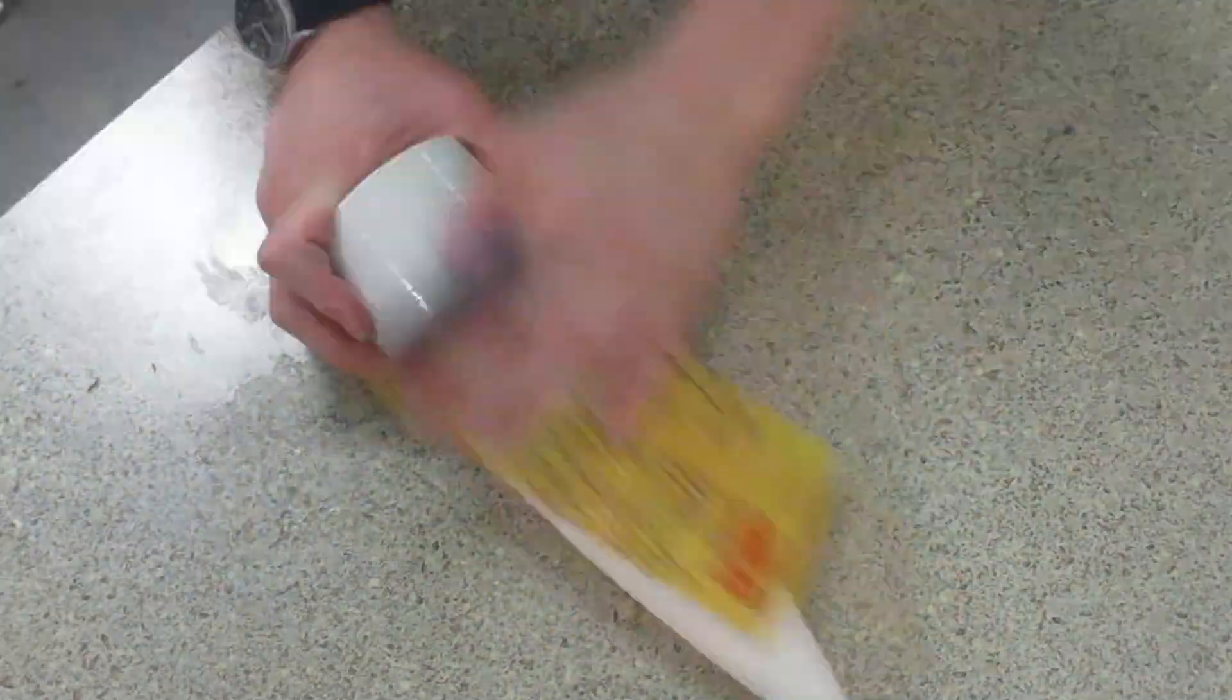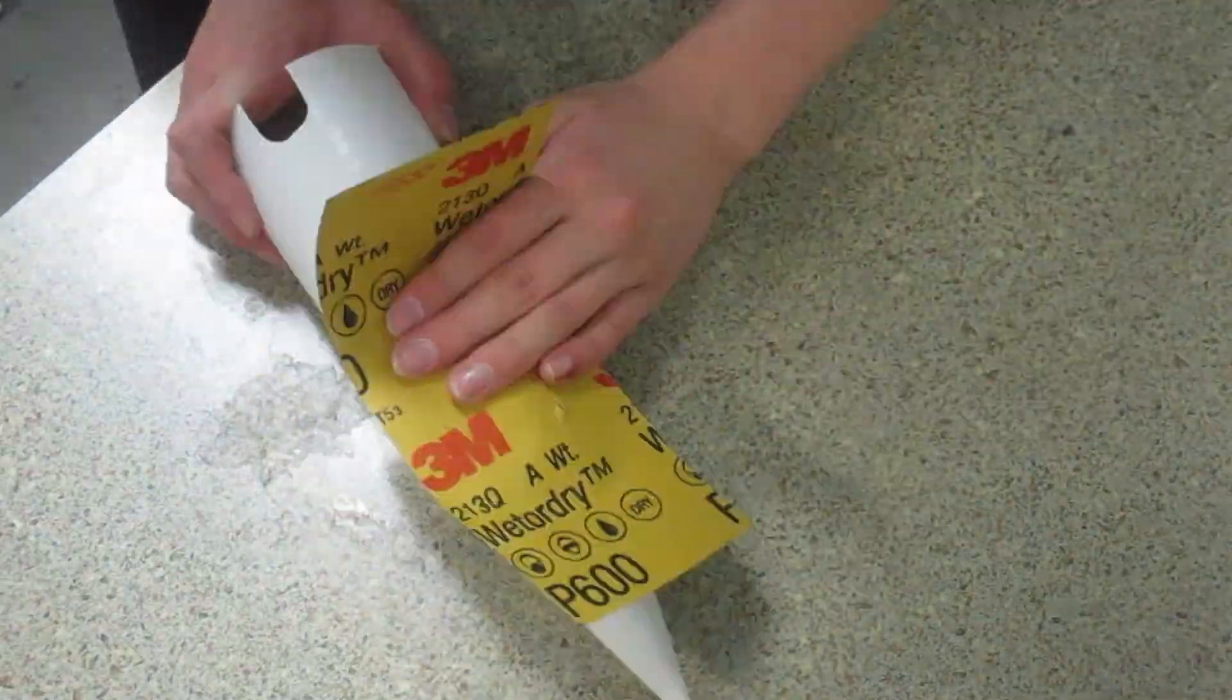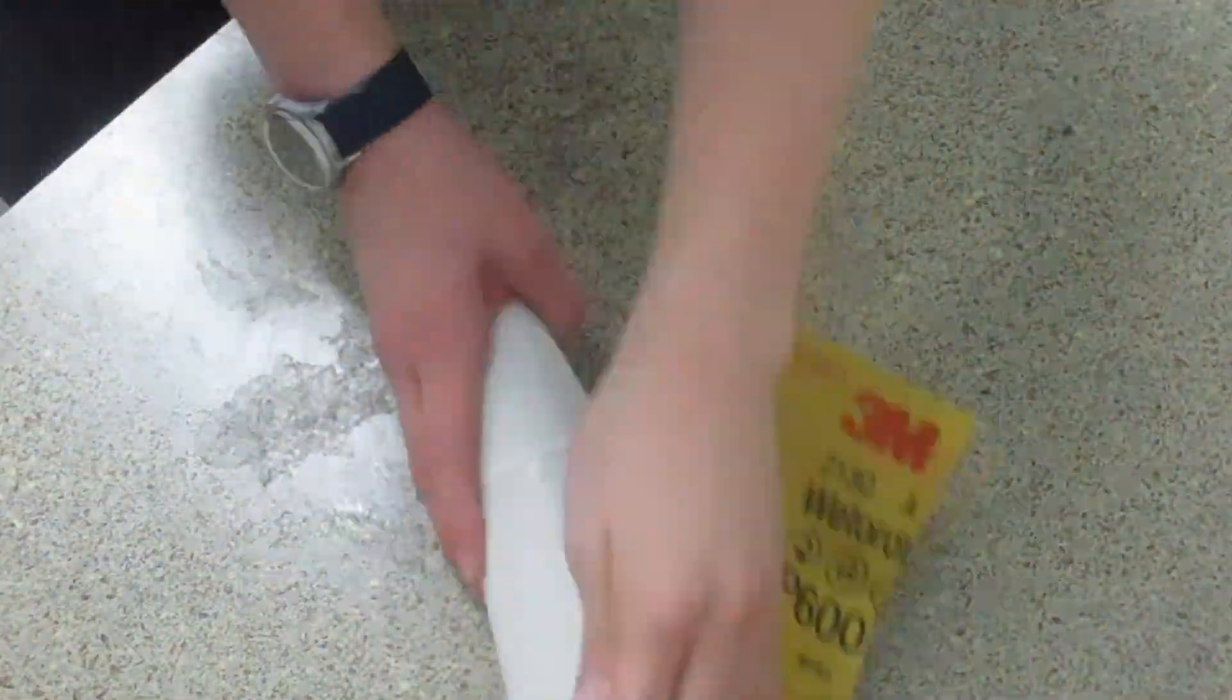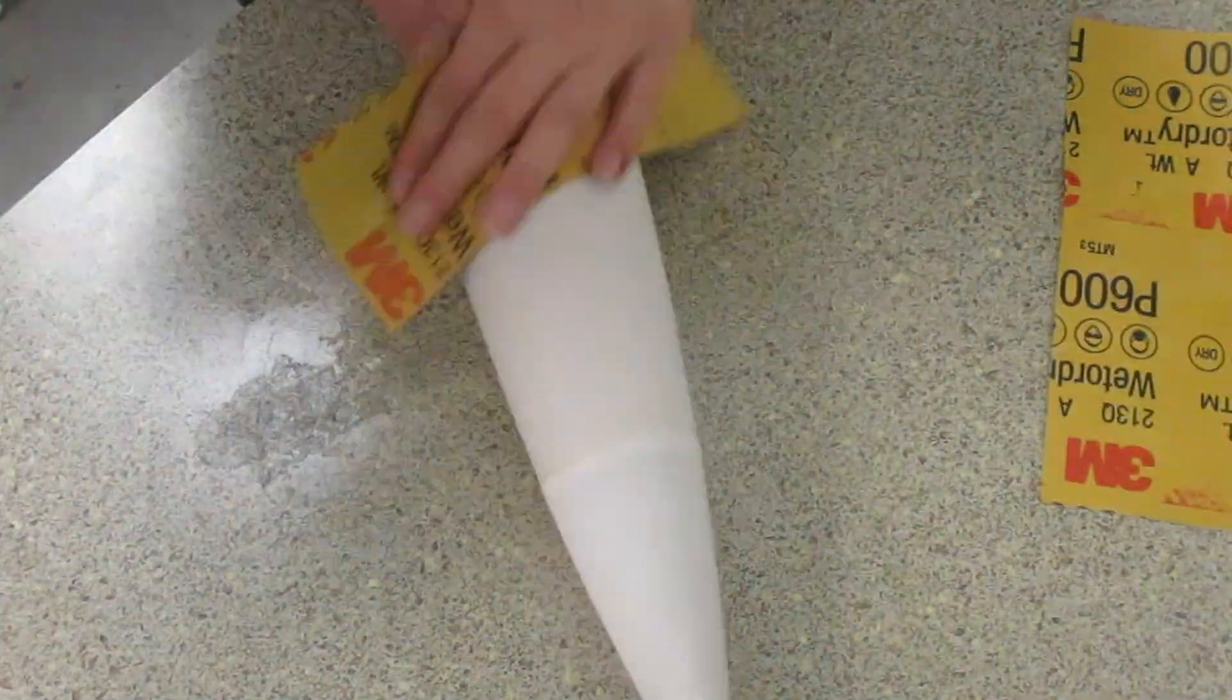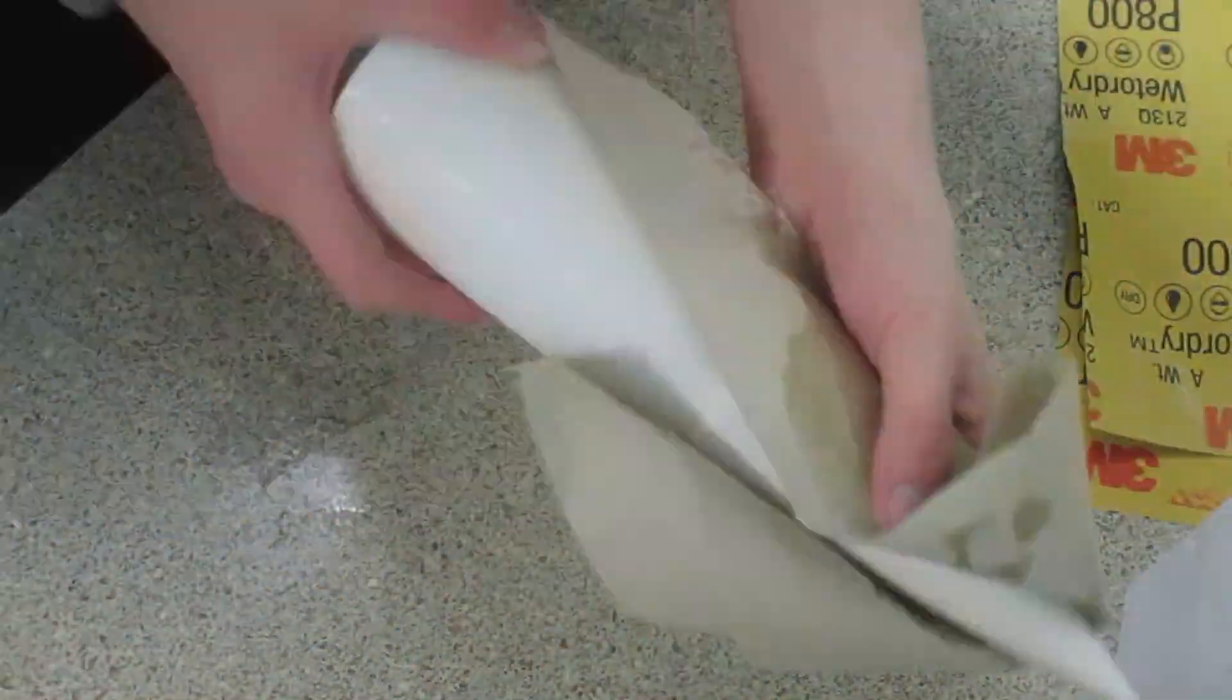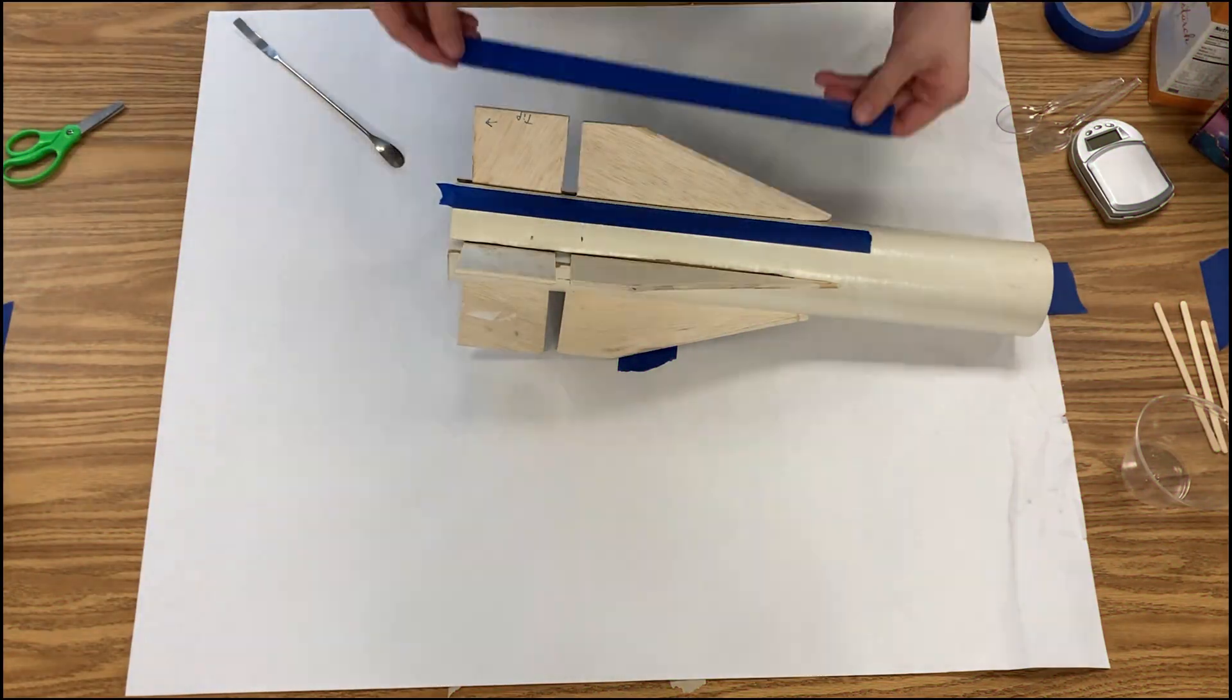Now that layer of resin has cured on the nose cone, I can go back and sand it all down. In between working on the nose cone and the inner assembly, I took the booster tube and used a combination of different tools like dremels and saws to cut the slots which the fins would slide into.